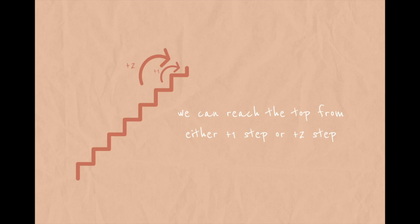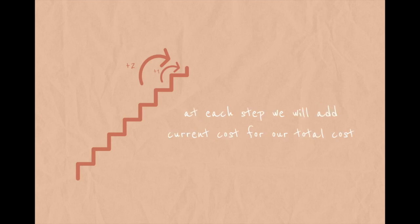We can reach the top and we have two options — two ways to reach the top: one step or two steps. At each step, in order to climb, we need to pay the cost. When we reach the top, we need to find the total cost — the minimum total cost to climb to the top.